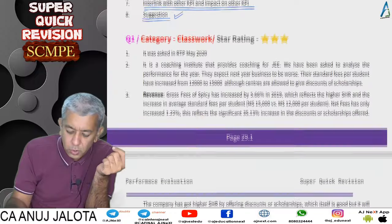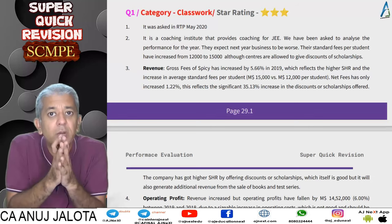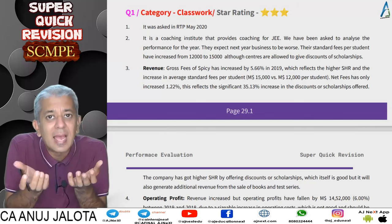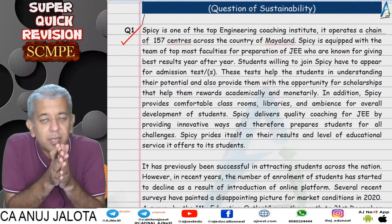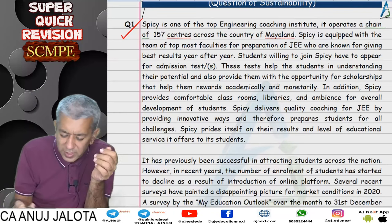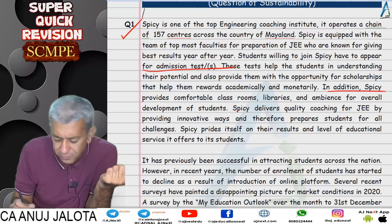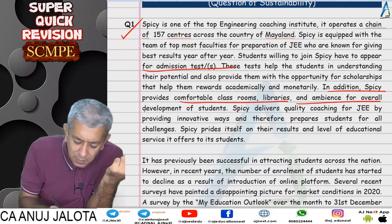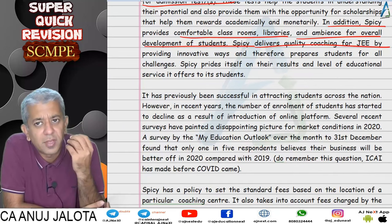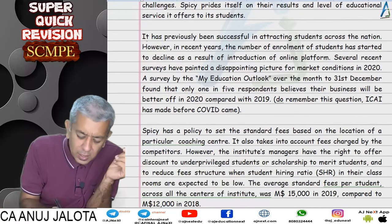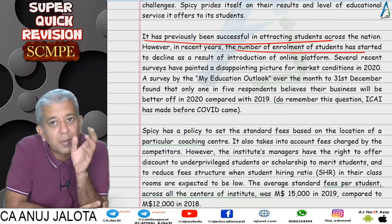That was the introduction — this chapter is all about data; they can give you any type of company and you should analyze how the data can be used for the betterment of the company. Question number one was one of the best questions in this chapter. There was a coaching institute called SPICY which teaches engineering students for JEE. This institute provides comfortable classrooms, libraries, good ambience, overall student development, quality coaching, and innovative teaching methods.